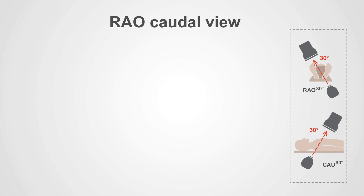Now let's take a look at the left coronary artery. This is an altogether more complicated artery with more branches. We're going to look at it in a couple of views to help you orientate yourself. We'll start off with the RAO caudal view — as you can see from the key, this is RAO 30, caudal 30.